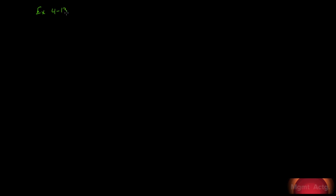Exercise 13: go back to the beginning, learning objective one, learning objective two. The question is about missing data and basic cost-volume-profit concepts. We have two charts with eight cases and we're missing some data. Fill in the missing amounts in each of the eight case situations — each case is independent of the others. One hint: prepare a contribution format income statement for each case, enter the known data, then compute the missing items. But follow along and we'll work through it.